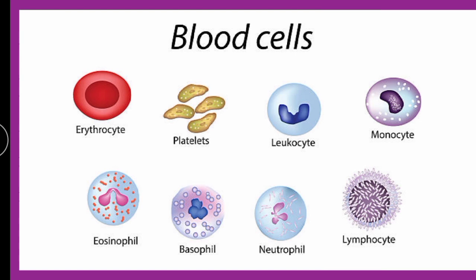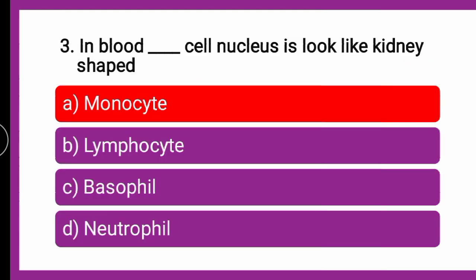If you talk about blood cells, the 45% formed elements include RBCs, WBCs, and platelets. Among the WBCs, some are granulocytes and some are agranulocytes. If you talk about the kidney-shaped WBC, this is nothing but the monocyte. So the correct answer is monocyte — in blood, the monocyte cell nucleus looks like kidney-shaped.